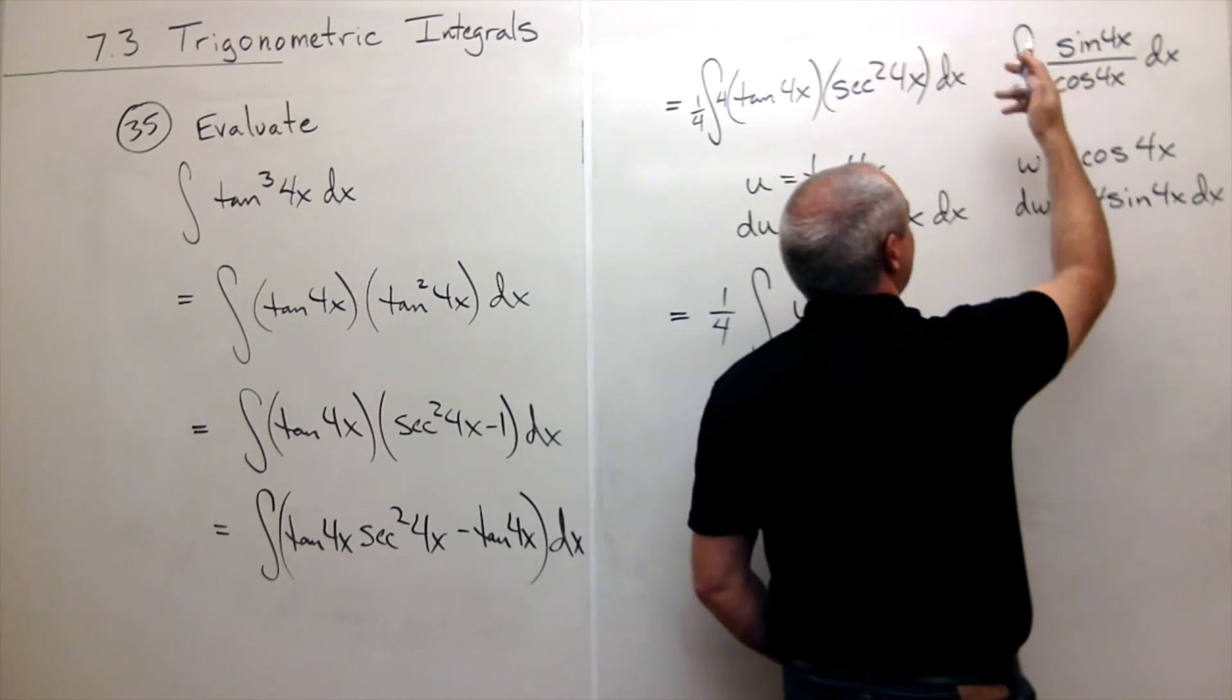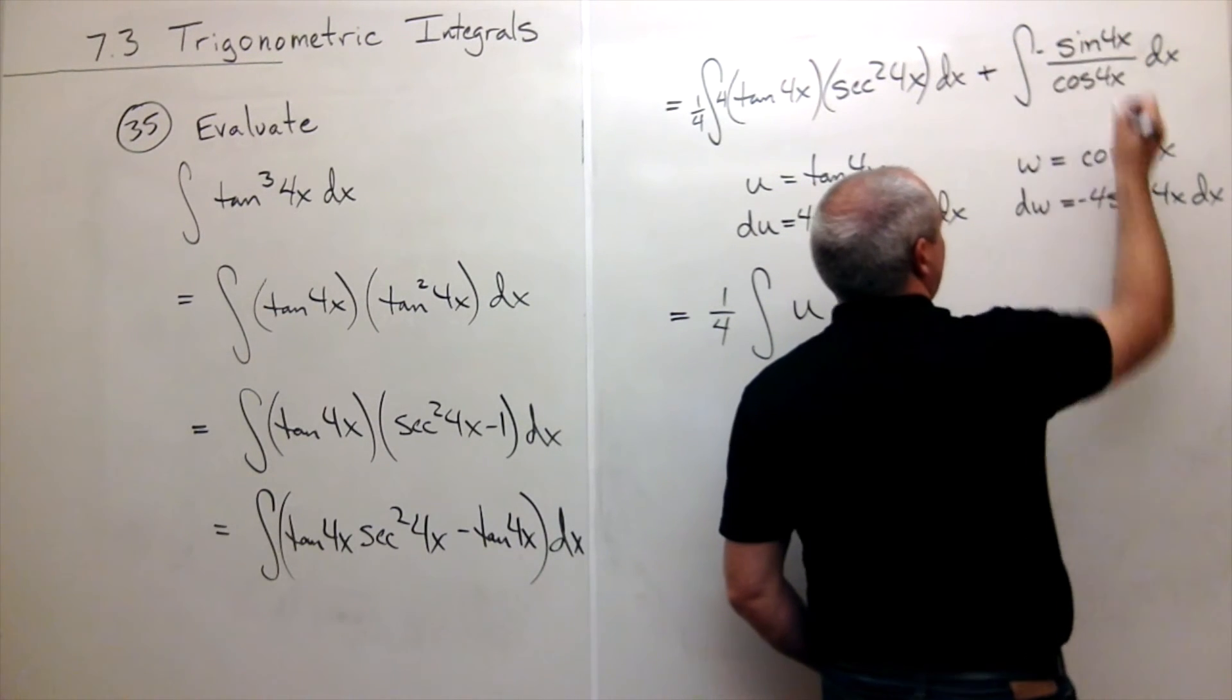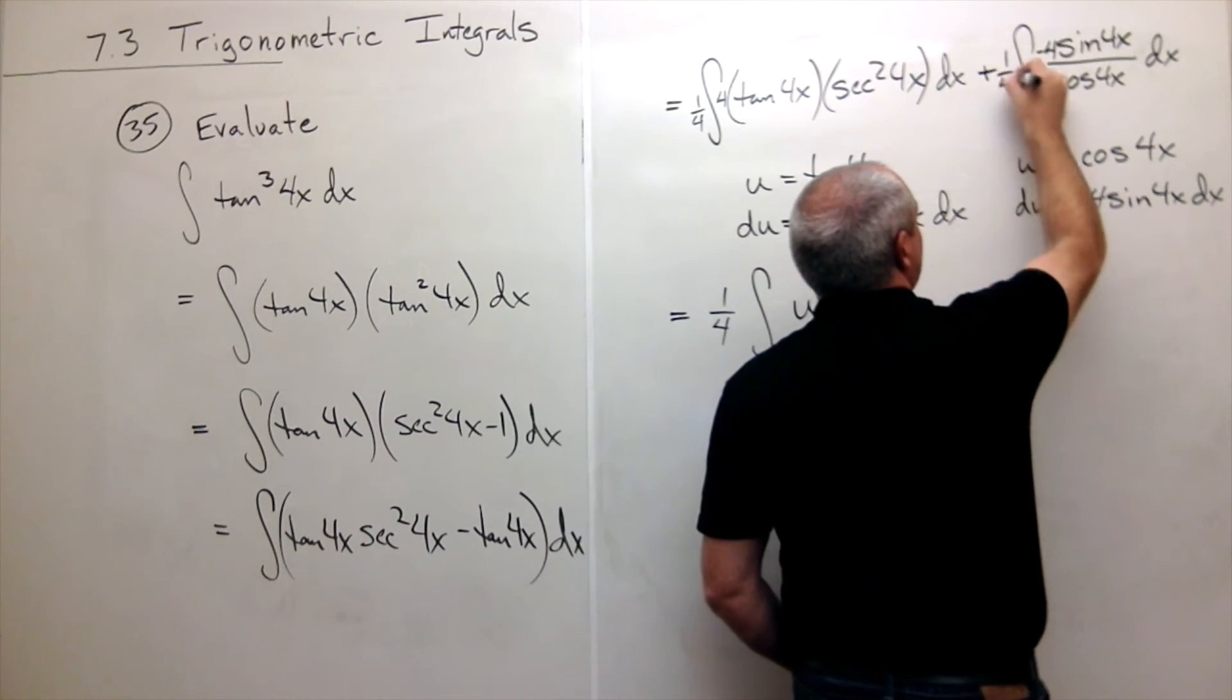If I move it in, this is a positive. So I'm putting the negative in here, and I also need a 4. So that means I need a 1 fourth on the outside.